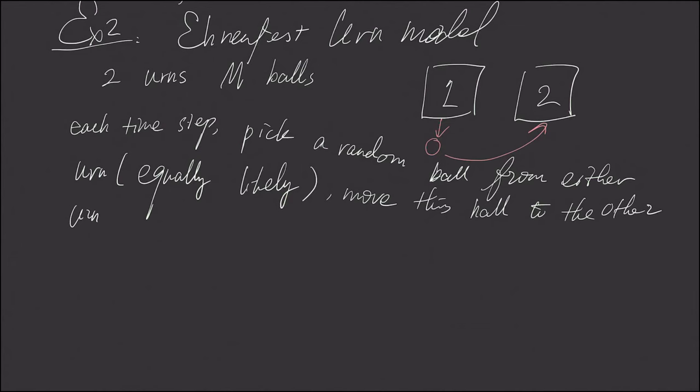And then, we have our Markov chain, which is x sub n, which is a number. So let's say urn number one, it doesn't matter which urn, but let's pick one.